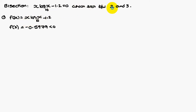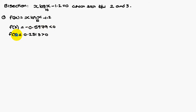The root lies between 2 and 3. Let us check for 2: f(2) is equal to 2·log₁₀(2) minus 1.2. If you simplify, you get minus 0.5979, which is a negative value. Similarly, for f(3), it is 0.2313, which is a positive value. Always the root lies between 2 consecutive opposite signs. Here f(2) is a negative value, f(3) is a positive value. Therefore, the root lies between 2 and 3.